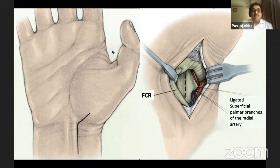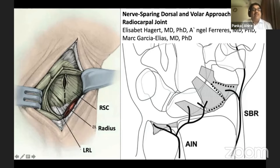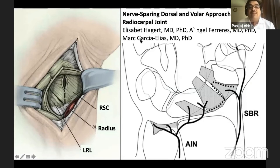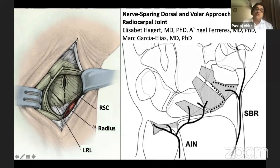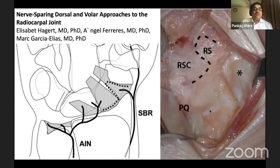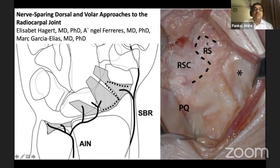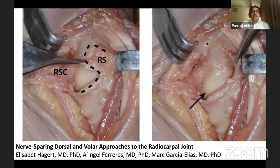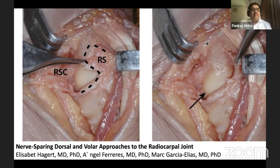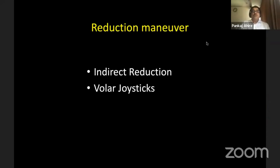Once the FCR sheath is divided, we can either divide the capsule in a longitudinal fashion, or we can do a ligament-sparing approach described by Margarcia-Idas. With this approach, post-op rehabilitation is supposed to be better with better proprioception. You make two flaps between the radioscaphocapitate ligament and the radioscaphoid ligament. It is technically difficult because this is a very tiny area. I haven't been doing it regularly; I am still quite happy to simply divide the ligament longitudinally as long as I can repair it post-operatively.